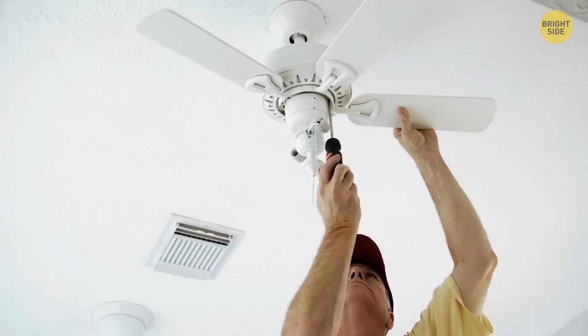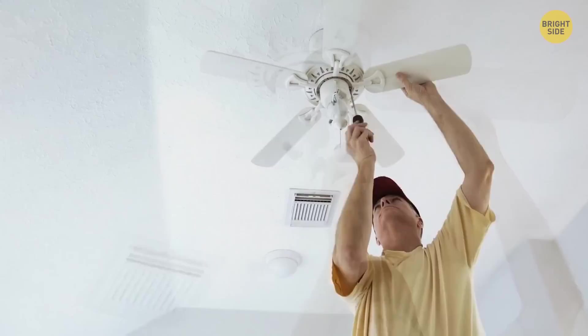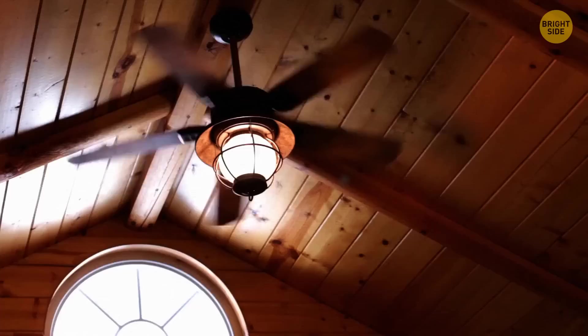Your ceiling fan has two modes of work, winter and summer. You need to find the switch on it. Push it up to activate the winter mode and down for the summer one. In summer mode, the fan pushes the air down. It pulls the air up in winter.